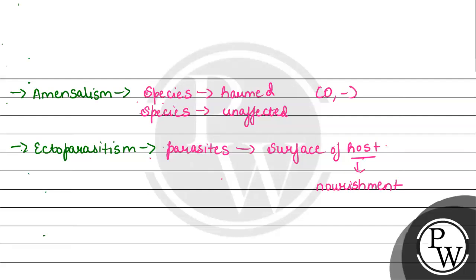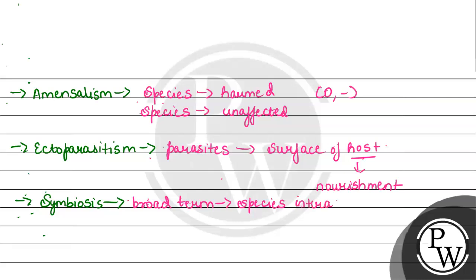Option number C देख लेते हैं which is symbiosis. Symbiosis क्या होता है? Symbiosis होता है जो एक तरह से यह एक broad range है, यह broad term है जिसके अंदर सारी species interactions आती है, including commensalism, amensalism, mutualism. So इस broad term के अंदर सारी हमारी species interactions आती है.